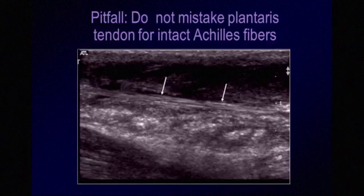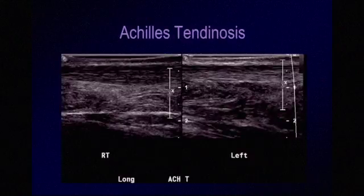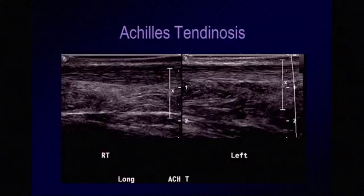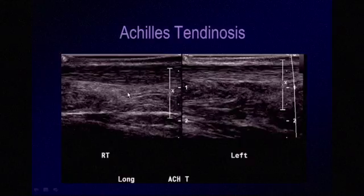Many times you may see a tendinous structure medial to the Achilles tendon — this is the plantaris tendon, which we don't want to mistake for intact Achilles fibers. Tendinosis is another type of pathology that can affect tendons — a chronic repetitive injury that leads to mucoid degeneration and can progress to tears. Here we compare the right Achilles tendon, which is hypoechoic and thickened with loss of normal architecture, to the normal left Achilles tendon. This is a case of Achilles tendinosis.